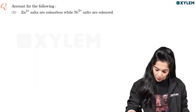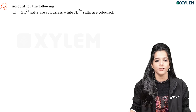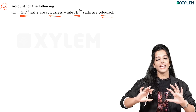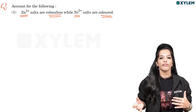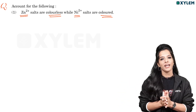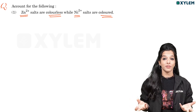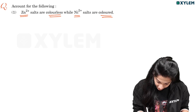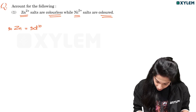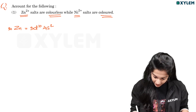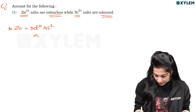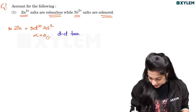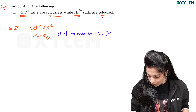Zn2+ salts are colorless while Ni2+ salts are colored. Zn2+ is colorless, Ni2+ is colored. Consider their electronic configurations — DD transition determines color. DD transition gives colored compounds. Zn has atomic number 30 with configuration 3D10, 4S2. When it forms Zn2+, 3D is fully filled. n equals zero — no unpaired electrons, no DD transition possible. Therefore Zn2+ is colorless. For Ni2+, DD transition is possible, so Ni2+ is colored.